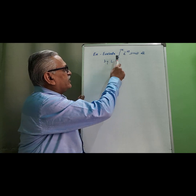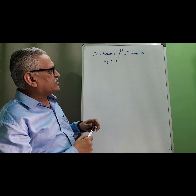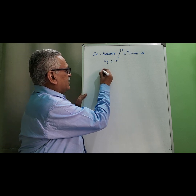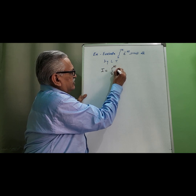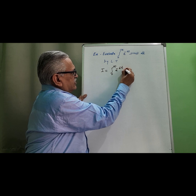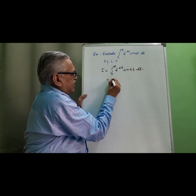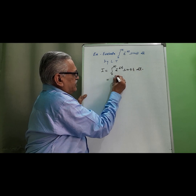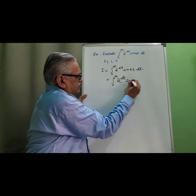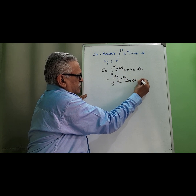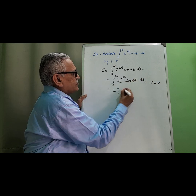Hello friends. Evaluate the integral from 0 to infinity of e raised to minus 6t into sine 4t by Laplace transform. The given integral can be rewritten as the integral from 0 to infinity of e raised to minus 6t into sine of 4t dt, which corresponds to the Laplace transform of sine 4t evaluated at s equals 6.